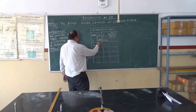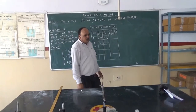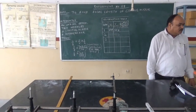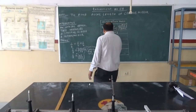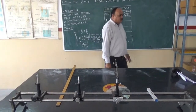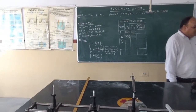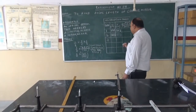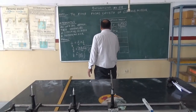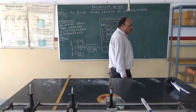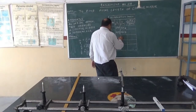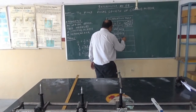We will now decrease the distance of the object from the concave mirror and see different readings. For example, if we take object distance at 23.7 centimeter, we get the image at 52.5 centimeter. And if we take object distance at 22.7 centimeter, then we get the image at 59.3 centimeter.